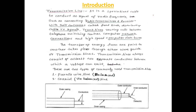First is the Introduction. A transmission line is a specialised cable used to conduct AC signals of radio frequency, such as connecting a radio transmitter and receiver with their antennas, distributing cable TV signals, trunk lines, routing calls between telephone switching centers, computer network connections, and high-speed computer data buses. The transfer of energy from one point to another takes place through either waveguides or transmission lines.